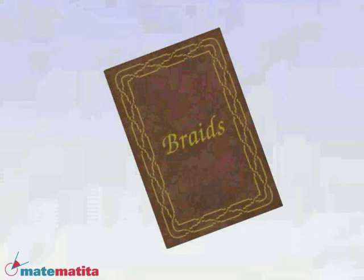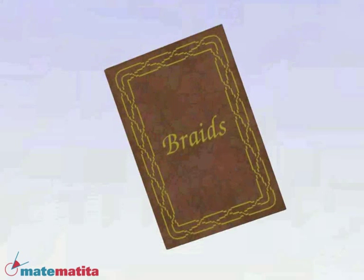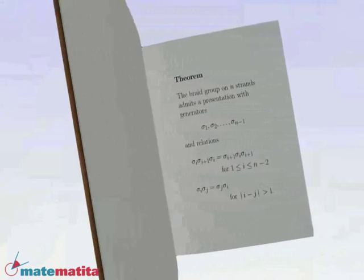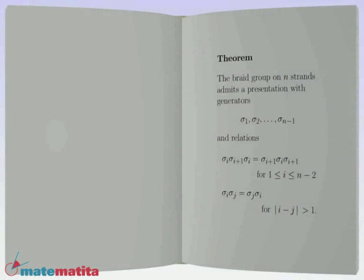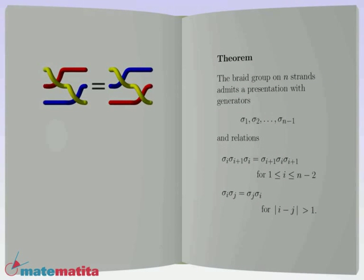We saw in the first chapter a way to describe the braid group. We specified some elementary braids, the generators, and then we found the relations, moves that can transform a word without changing the braid it describes.